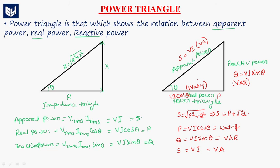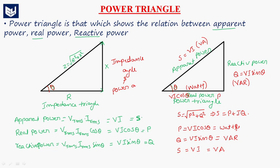By using this power triangle, if any two terms are known, we can find the third. For example, if you know active power and reactive power, you can find apparent power, and vice versa. Note that theta here is the power angle, and in general, the impedance angle and the power angle are one and the same — they are equal. This is about the power triangle. Thank you.